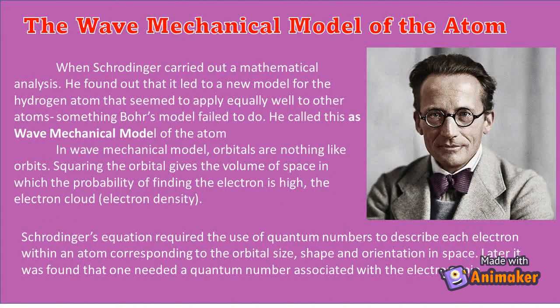When Schrödinger carried out a mathematical analysis, he found that it led to a new model for the hydrogen atom that seemed to apply equally well to other atoms, something Bohr's model failed to do. He called this the wave mechanical model of the atom. In wave mechanical model, orbitals are nothing like orbits.